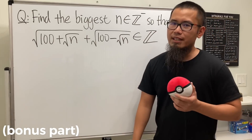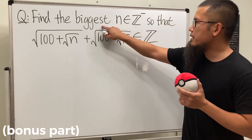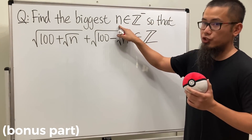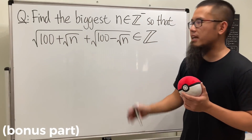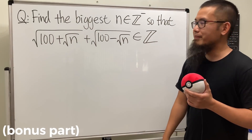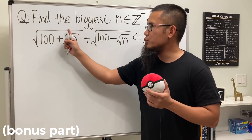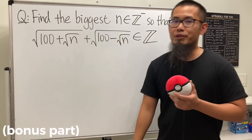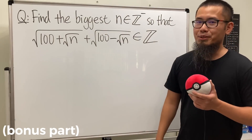Now here's another question: is it possible to find the biggest negative integer n such that the same expression gives us an integer? Note that when n is negative, the expression inside the square root becomes complex. I'll leave that one to you.